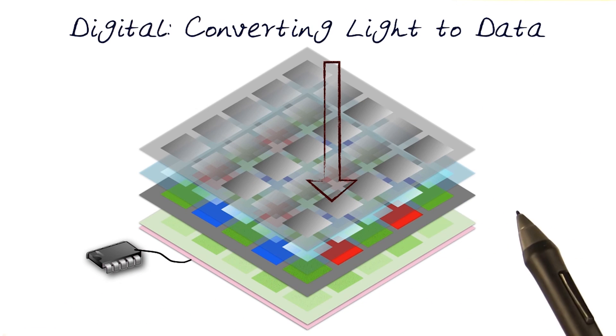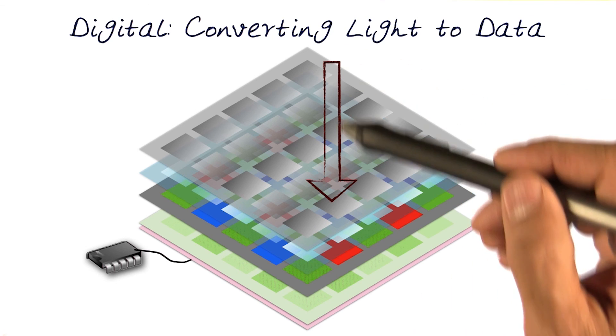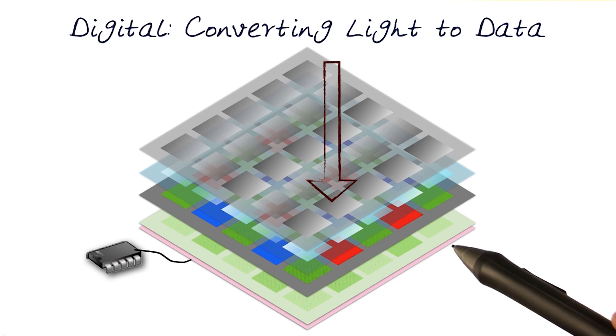So, in essence, we peeled this whole onion, and we saw all the details of how light goes all the way and then ends up as a stored electrical set of values, which are then converted to pixels.